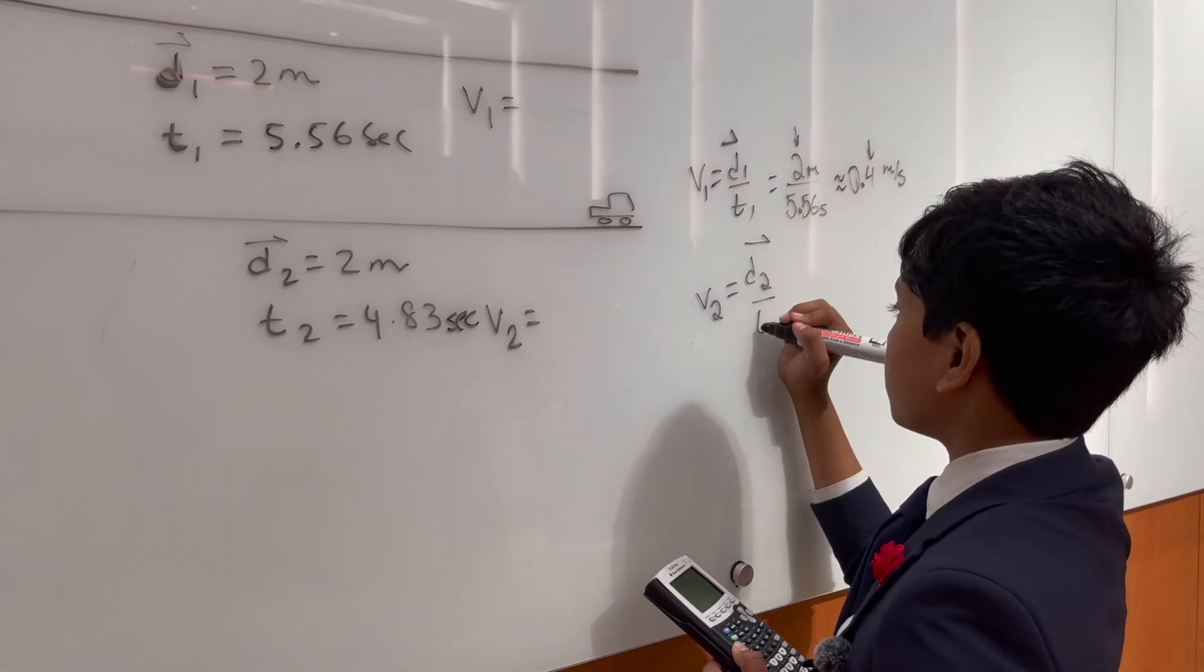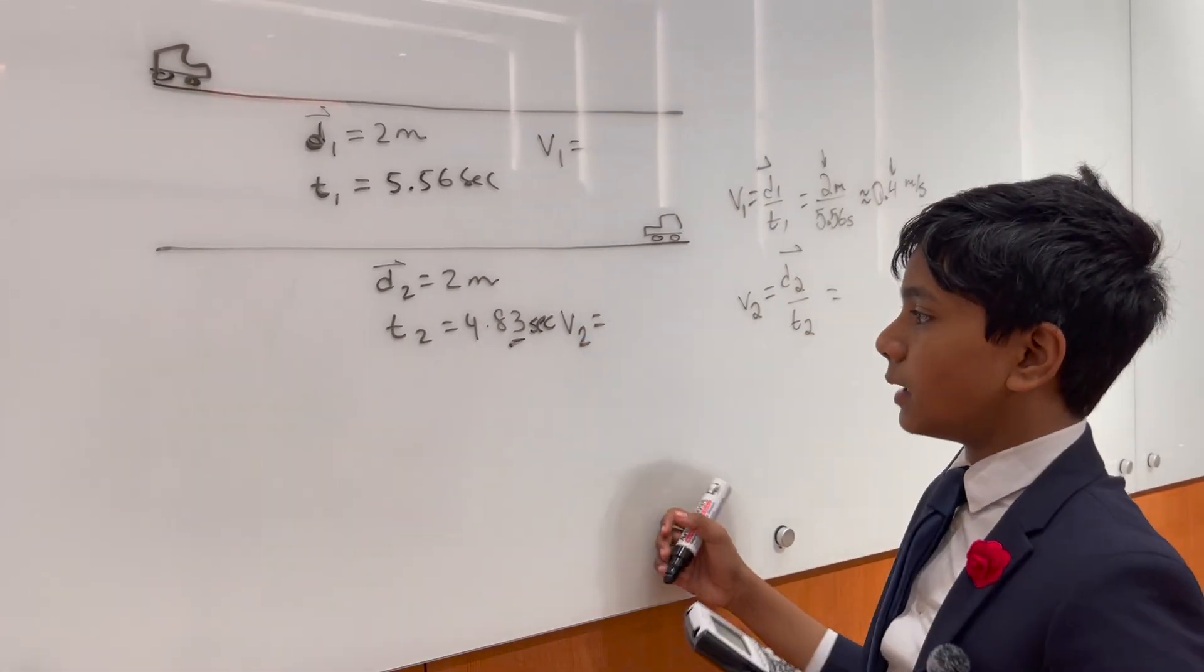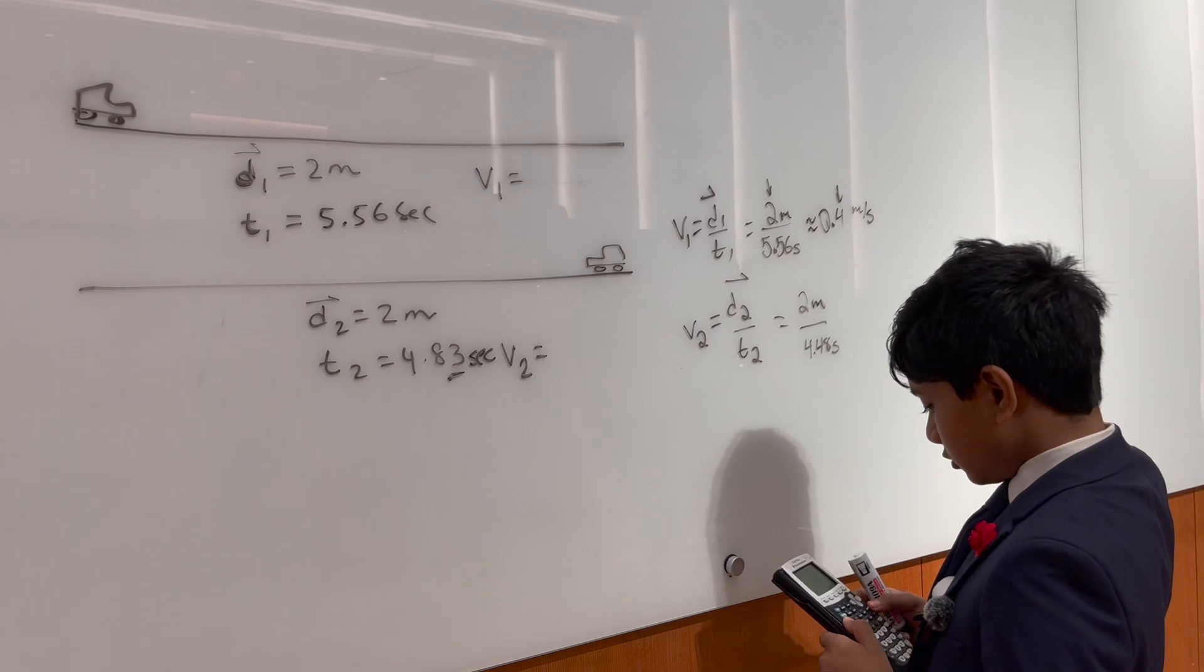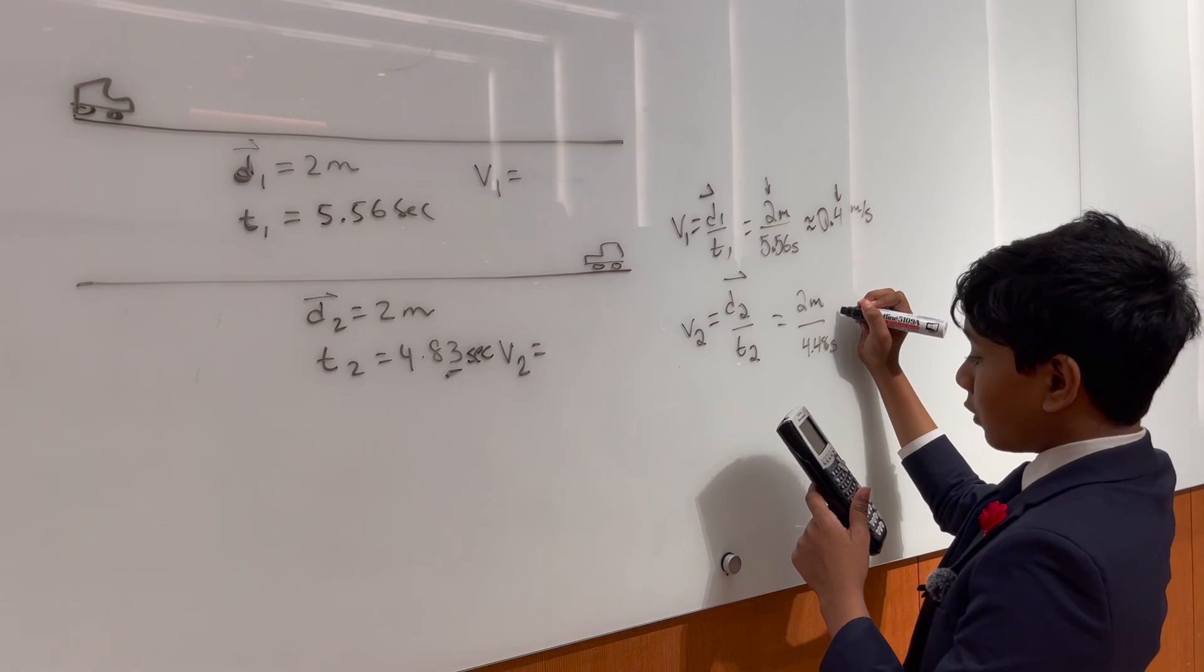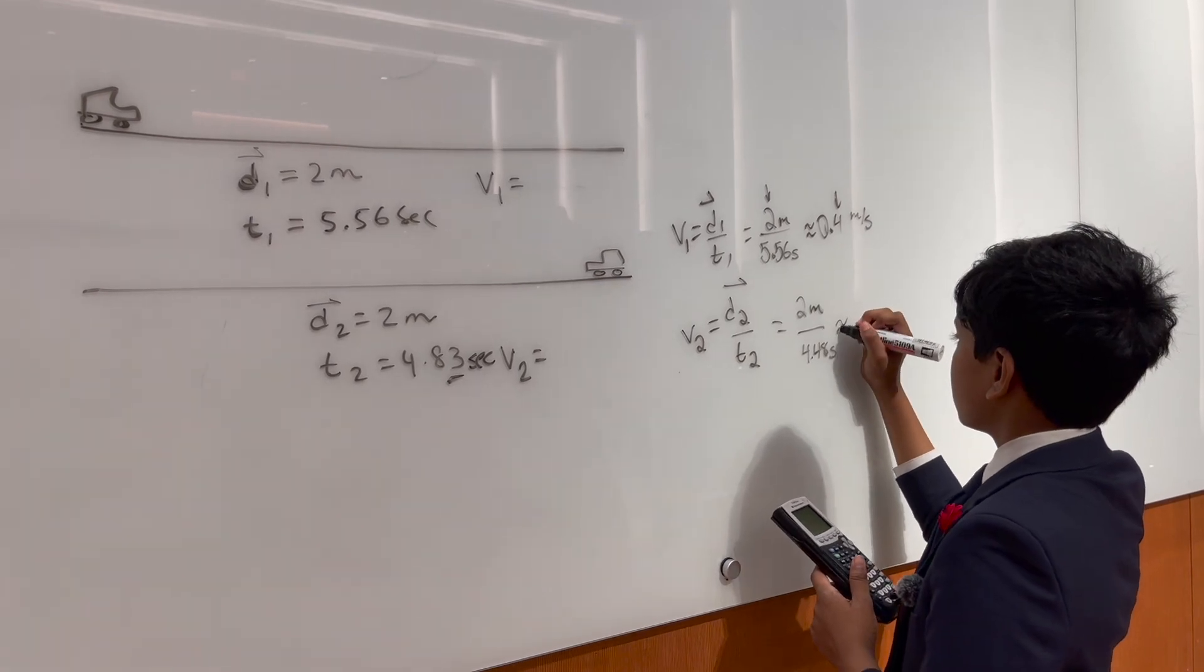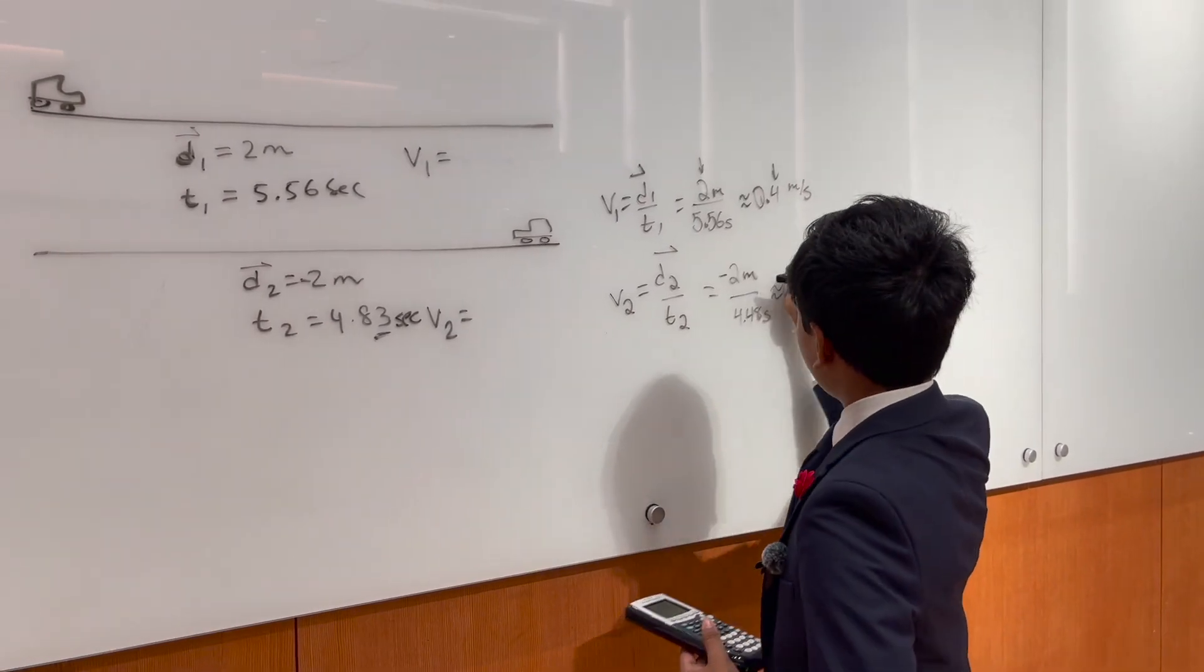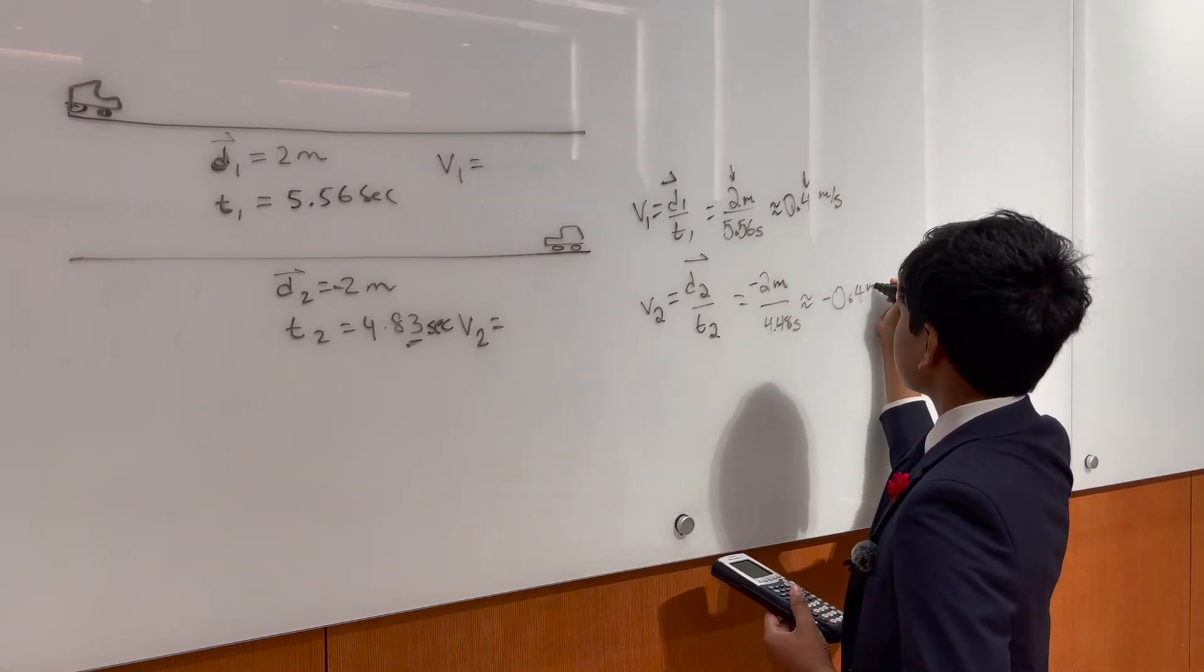This will simply have the same number of sig figs because the iPhone only records up to the centisecond. So, let's see. We have 2 meters over 4.48 meter seconds, which I'm going to assume is the same thing because of sig figs. Yep. It's approximately 0.45, but since we're using sig figs, it's just 0.4. I'm sorry. This is negative 0.4. Okay. So, then, that means that we're calculating negative 0.4 meters per second.